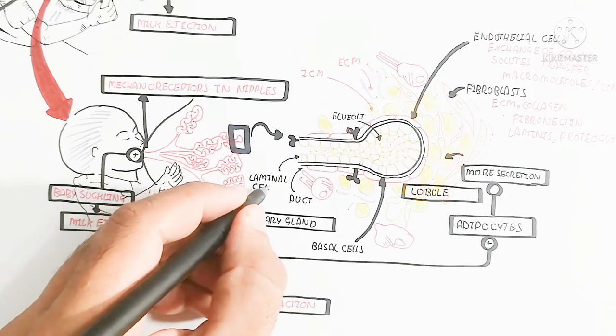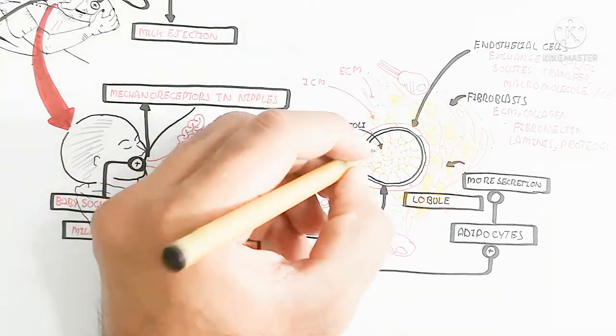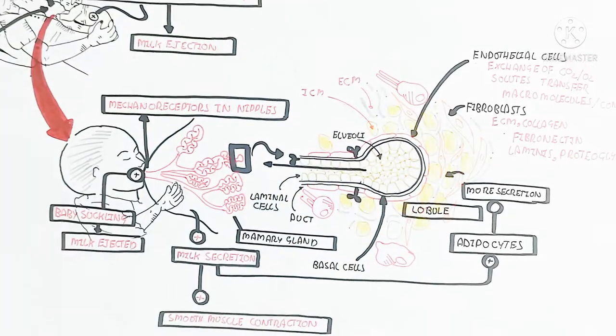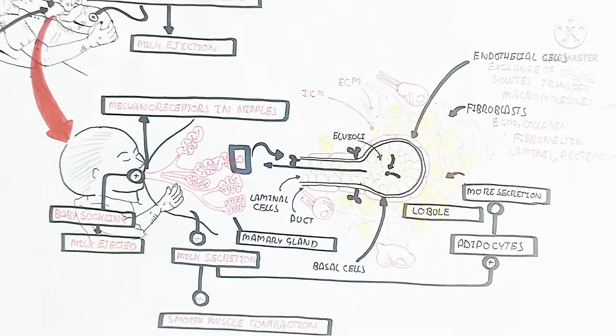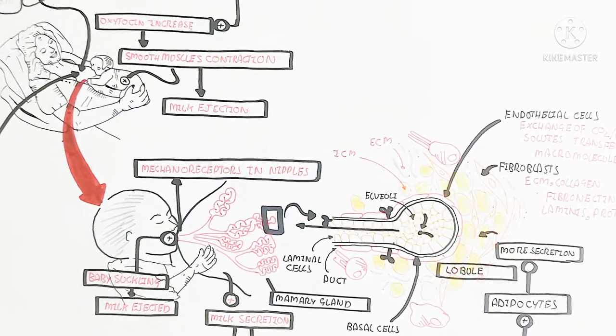Fibroblasts convert into fibrocytes. Adipocytes are stimulated to produce fat, which is mixed into the milk. The milk contains lactose.